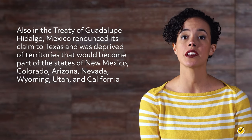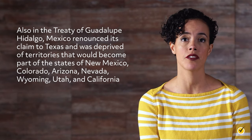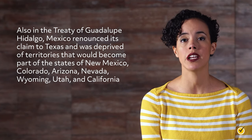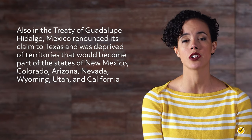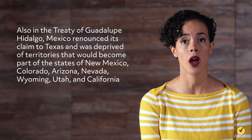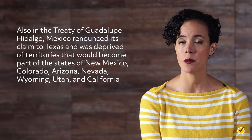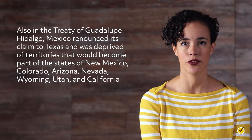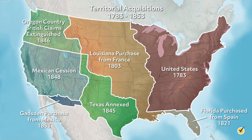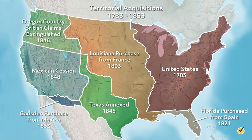In the Treaty of Guadalupe Hidalgo, the U.S. agreed to pay $15 million worth of damages to the Mexicans. Mexico renounced its claim to Texas and was deprived of territories that would become part of the states of New Mexico, Colorado, Arizona, Nevada, Wyoming, Utah, and California. With the American claim to the Oregon country already resolved and the Gadsden Purchase of 1853 adding southern territory to Arizona and New Mexico, the United States had opened up enormous tracts of land for settlement.